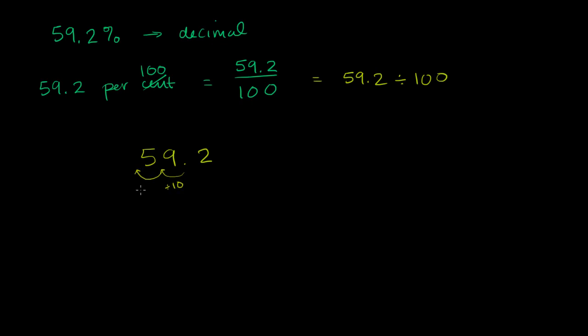We're dividing by 10 once, and then we're dividing by 10 again. Divide by 10 twice, you're essentially dividing by 100. So you move the decimal to the left twice.